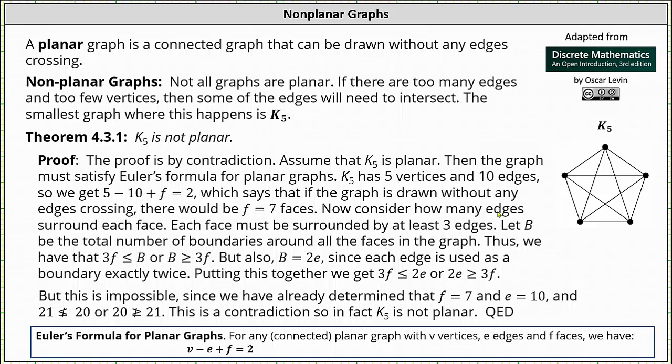Now consider how many edges surround each face. Each face must be surrounded by at least 3 edges. From here, if we let b be the total number of boundaries around all the faces in the graph, we have 3 times the number of faces f must be less than or equal to b the number of boundaries. Or the number of boundaries b must be greater than or equal to 3 times the number of faces f.